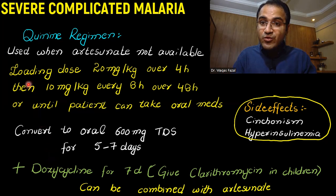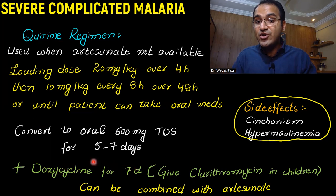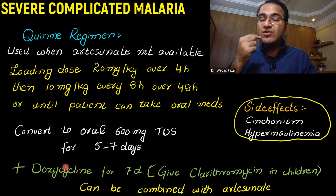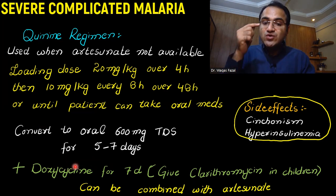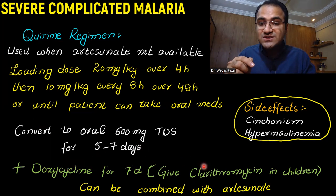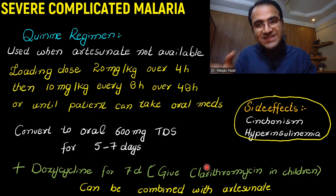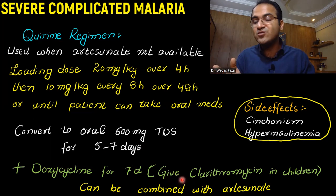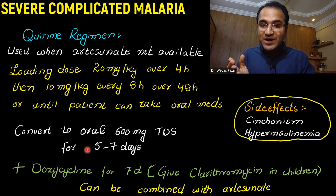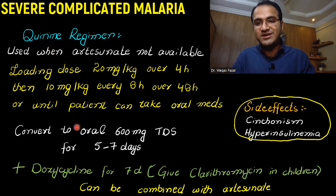You give quinine regimen combined with doxycycline for 7 days. Doxycycline is a tetracycline and is contraindicated in children because it affects the growth of teeth. For children, you can replace doxycycline with clarithromycin. If artesunate is available, it can be combined with quinine as well. But remember, doxycycline must be combined with the quinine regimen.